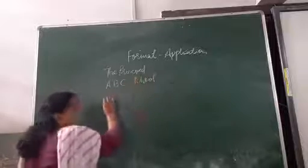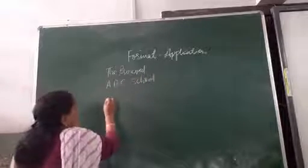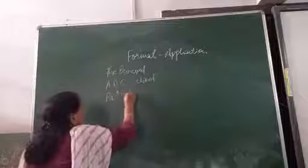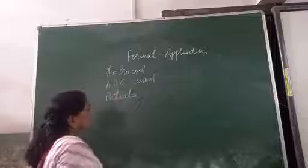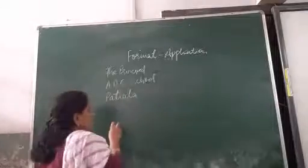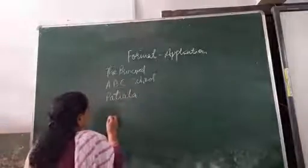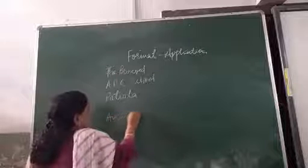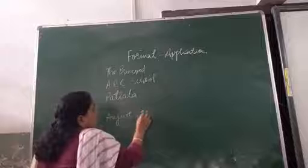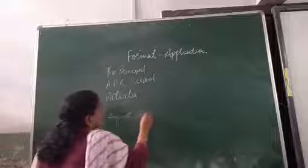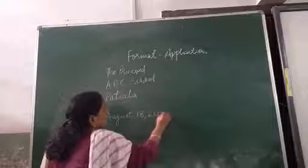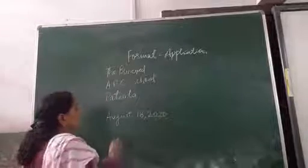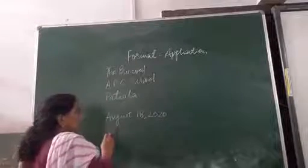Then write the name of the city — you can write Patiala. Then you have to leave a line. Here comes the date — it is written as August 18, 2020.